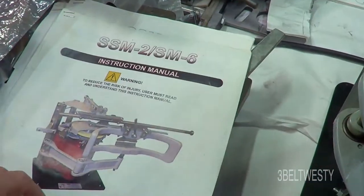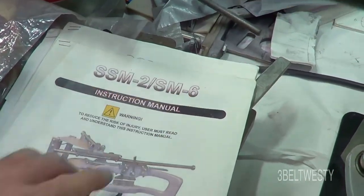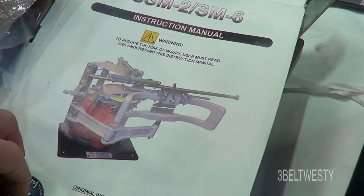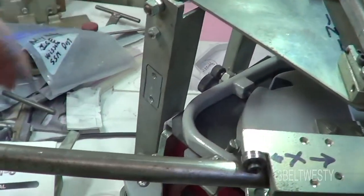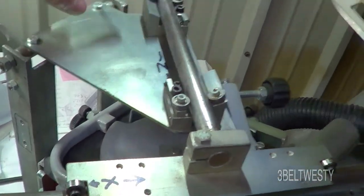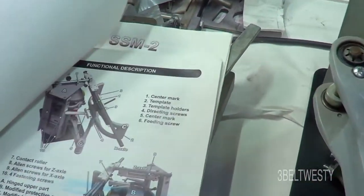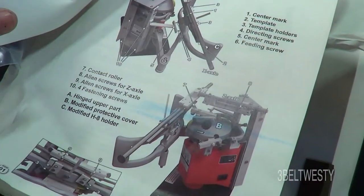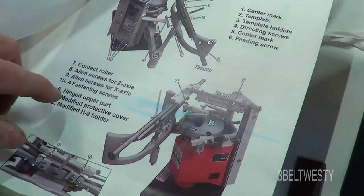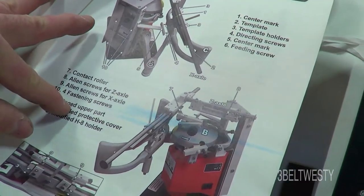That's the SM-6, which is this extra stuff that's added on here, which is this, this piece, and has this giant holder here, modified H8 holder.